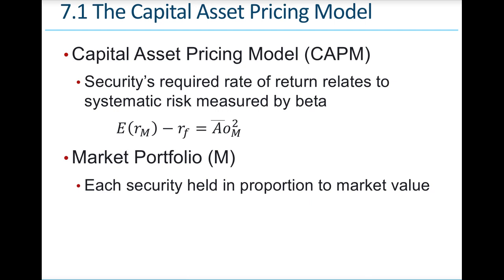About 50 years ago, finance professors William Sharpe and John Lintner developed a model that uses beta to formally link the notions of risk and return. This was called the Capital Asset Pricing Model. It attempts to quantify the relationship between risk and return for different investments.